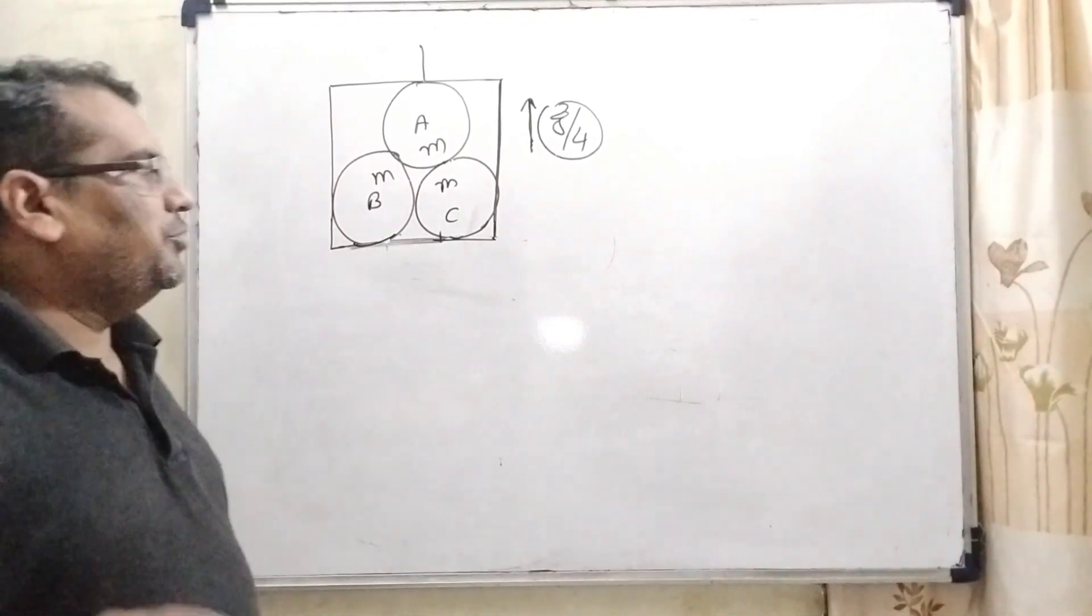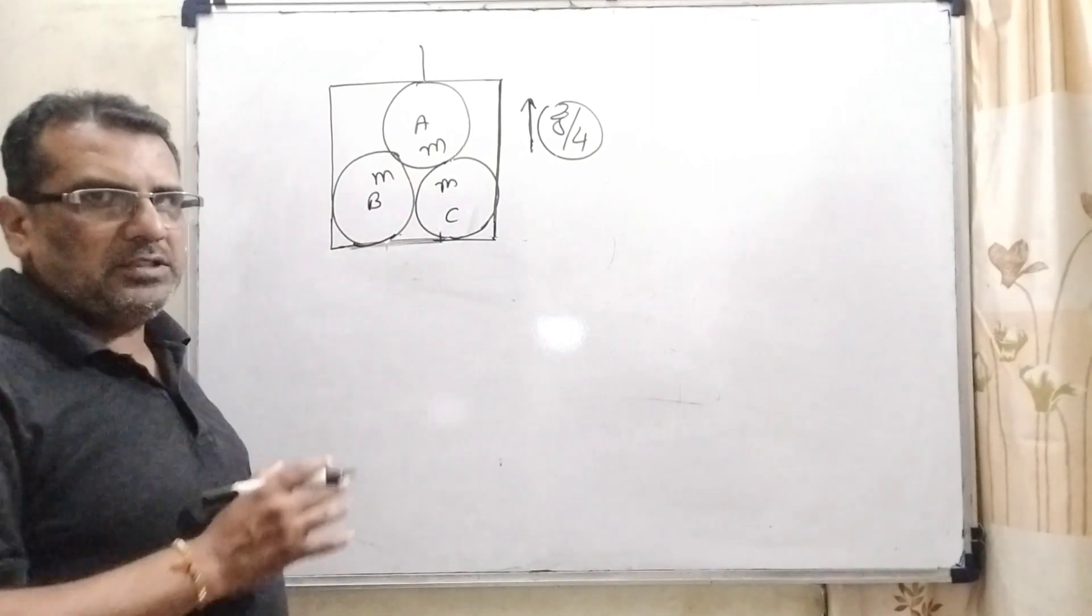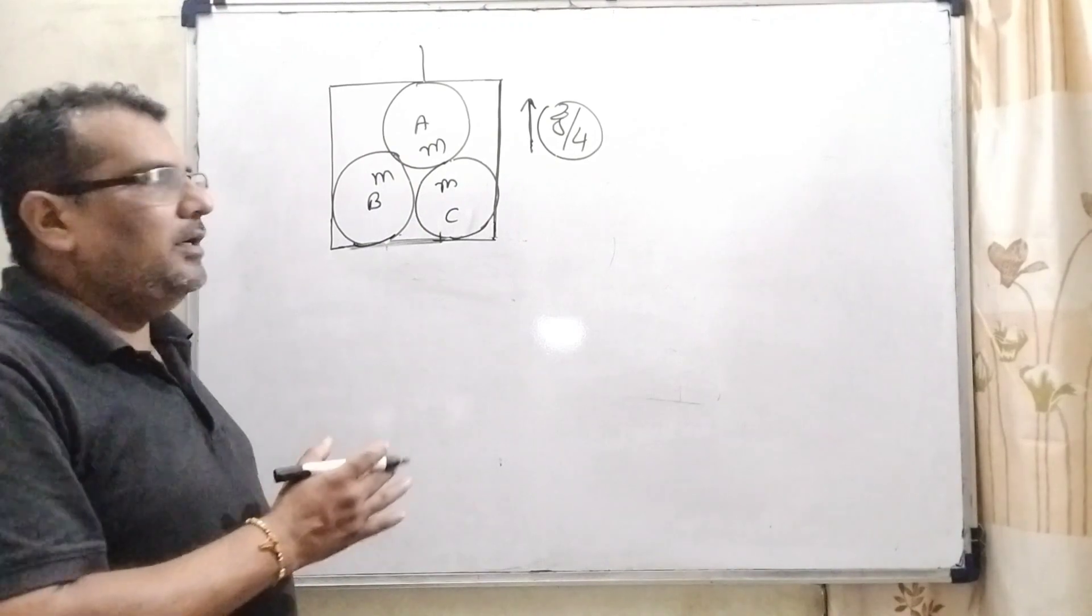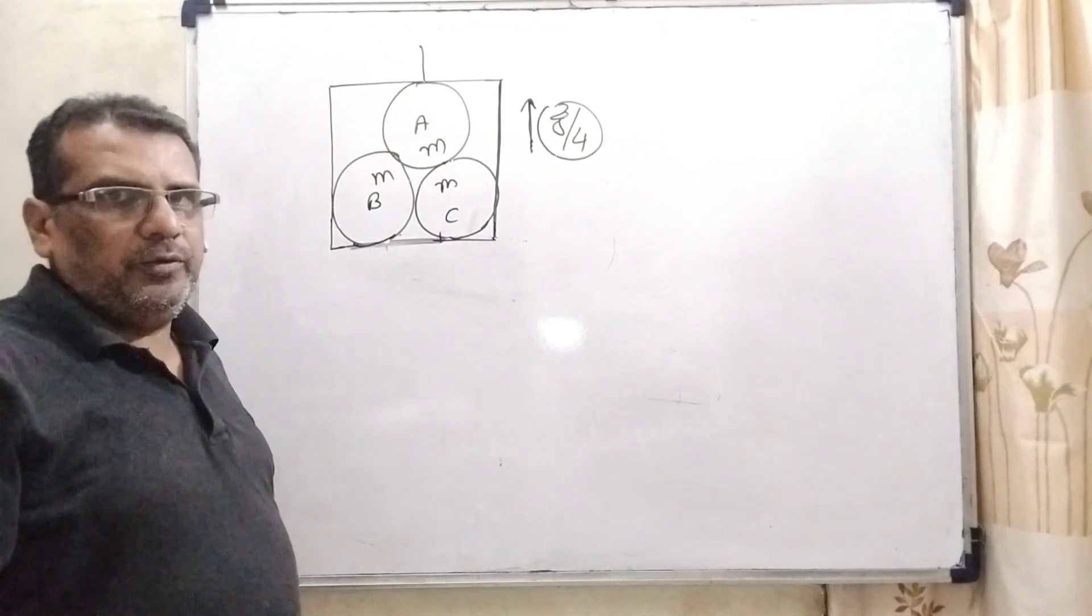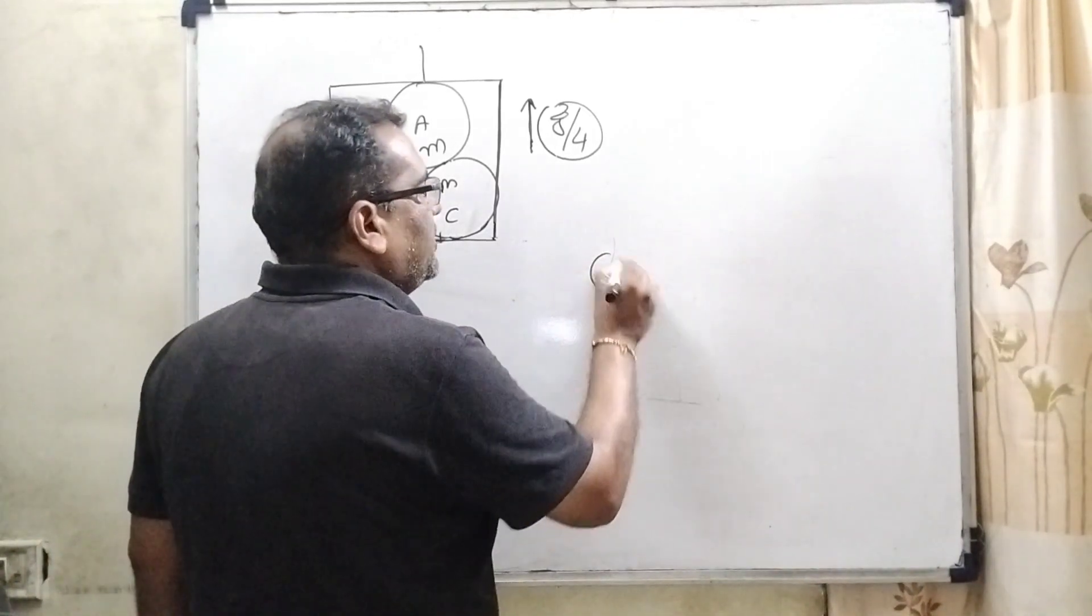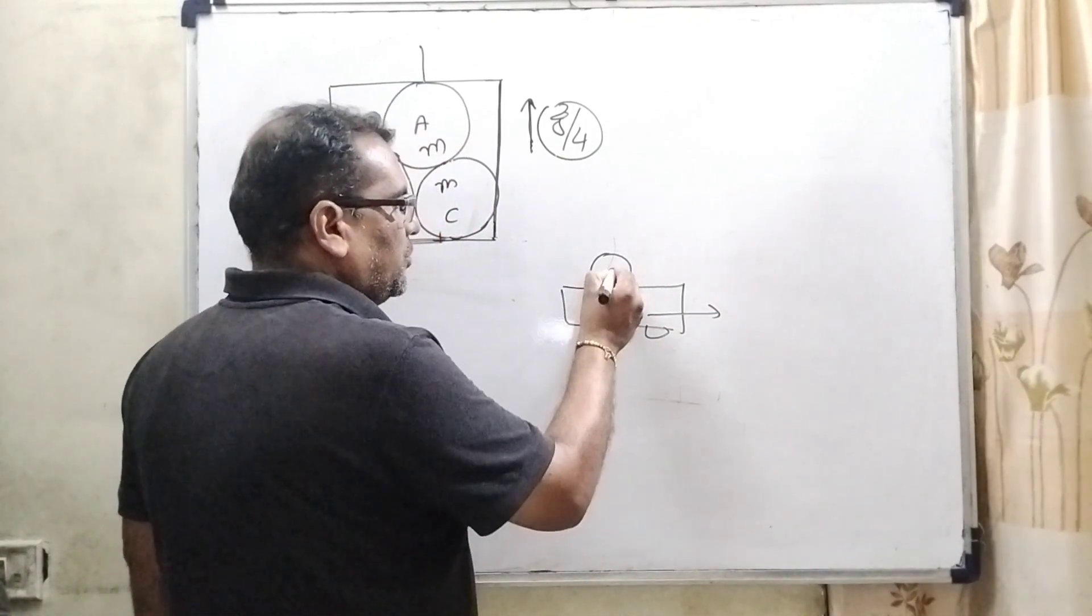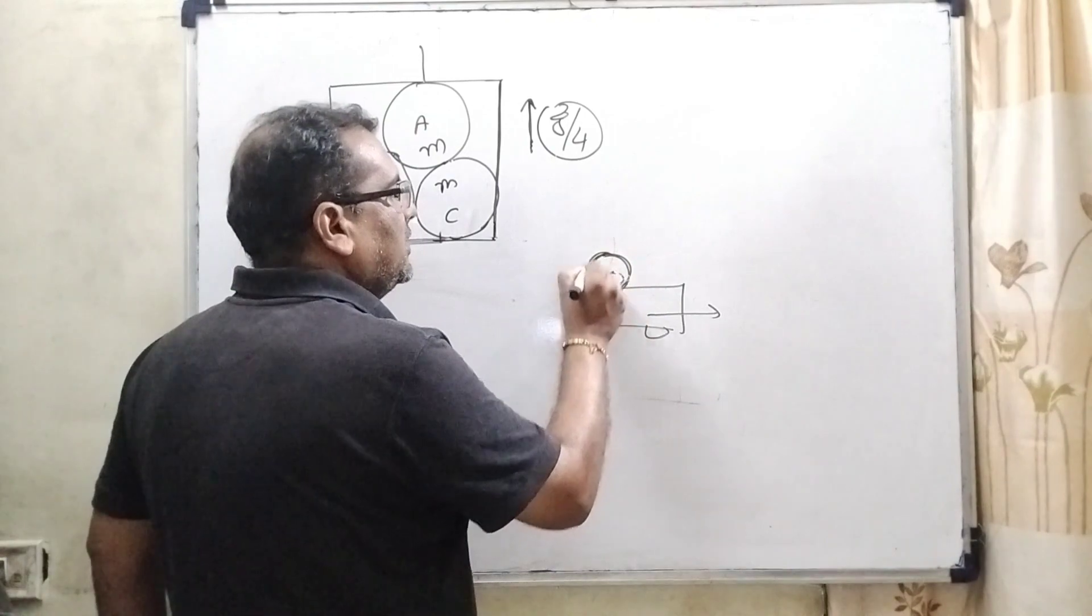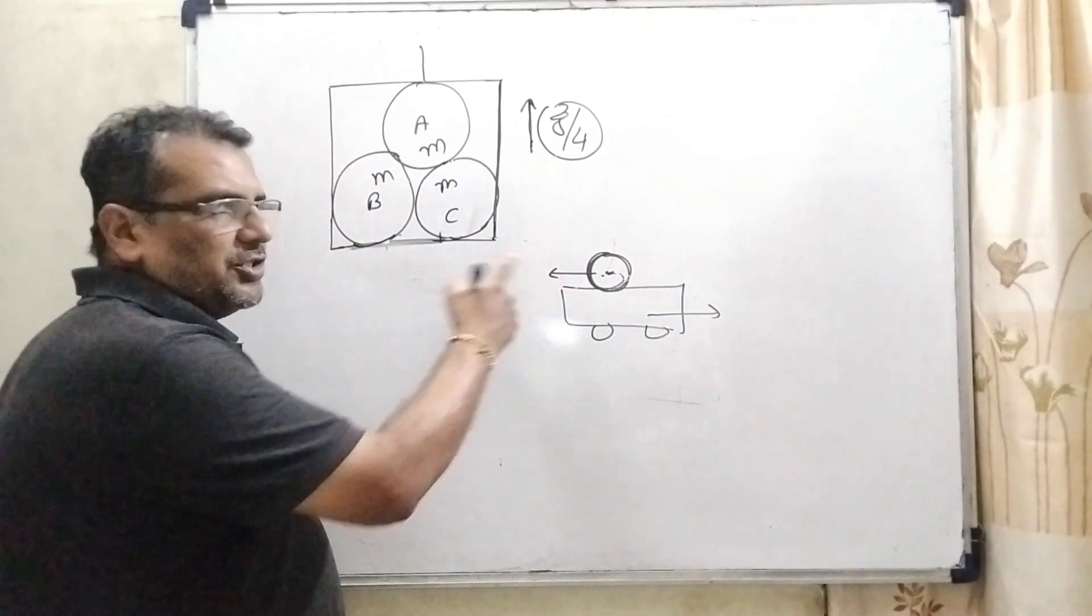Now, first of all, we have to think what the question has given. Here we have three spheres in a box. They are identical, each having mass m. And the whole system is going upside with acceleration g by 4. Therefore, we know that very well when any object is kept on another moving object, then on this body, pseudo acceleration is acting and its direction is opposite.